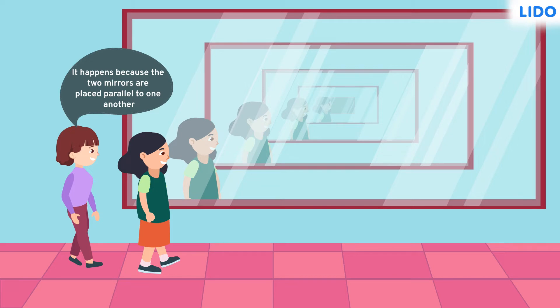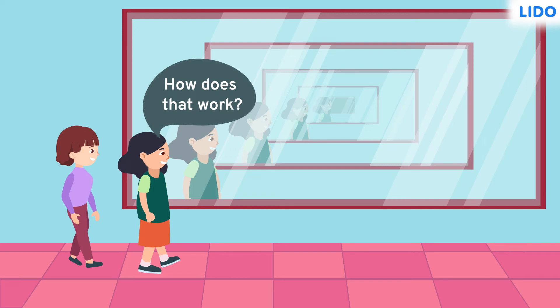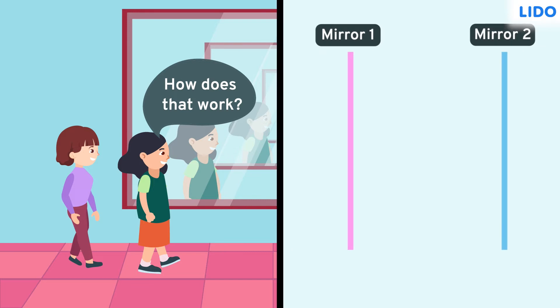Minoo was confused and asked her, how does that work? Her sister took out two mirrors from her makeup pouch and placed them parallel to one another. She placed a ball between the two mirrors.